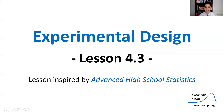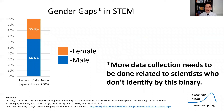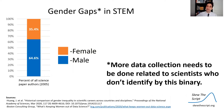Today we're discussing experimental design. This is lesson 4.3 in our course sequence, inspired by the folks at Advanced High School Statistics. We're talking about gender gaps in STEM — science, technology, engineering, and math. Right off the bat, we only have good data on folks who identify along the gender binary. There needs to be more data collected on those who don't identify by this binary, and we need future generations of statisticians to fix that.